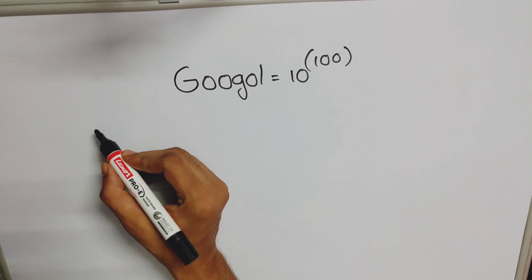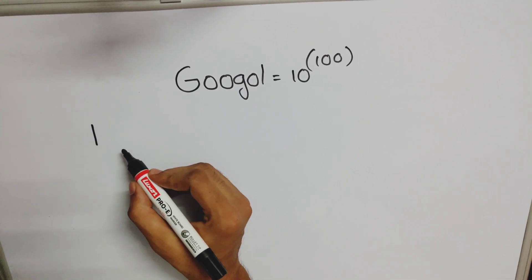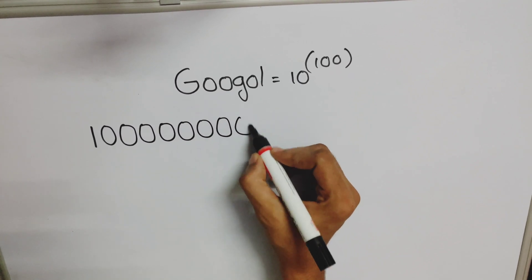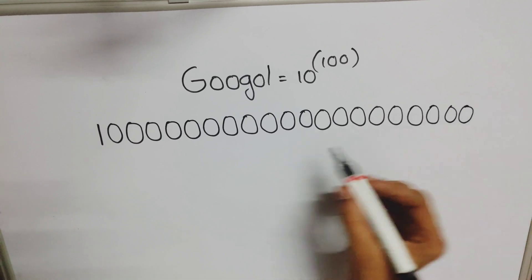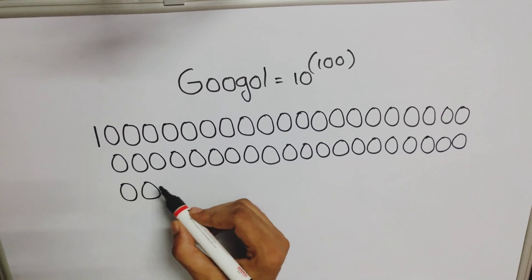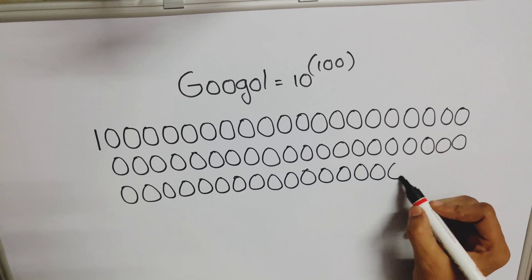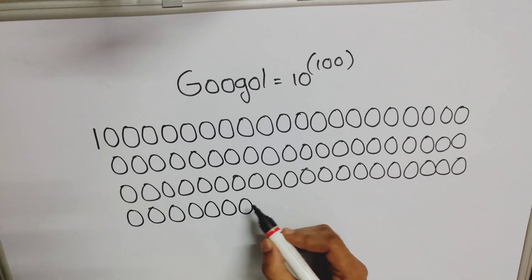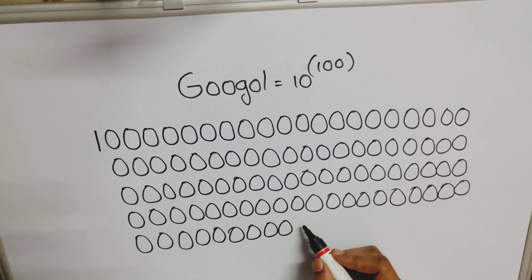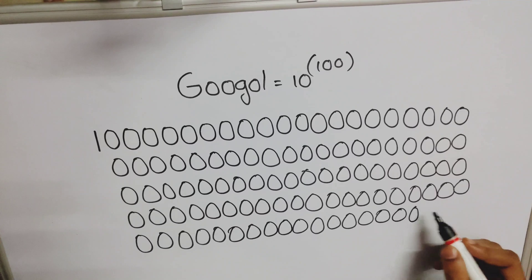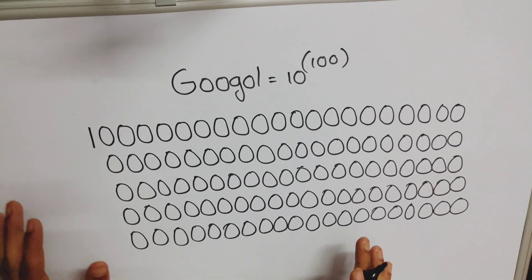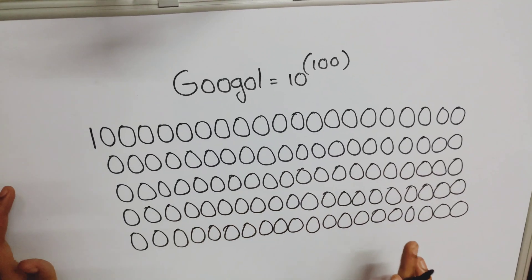Let us represent Google in its standard form, which is 1 followed by 100 zeros. So here is our 1 and we need to write 100 zeros: 1, 2, 3, 4... all the way through 10, 20, 30, 40, 50, 60, 70, 80, 90, and 100. So this is Google in its standard form — 1 followed by all these 100 zeros.